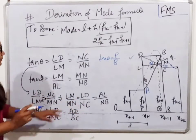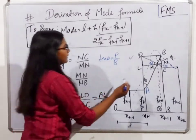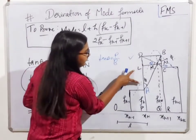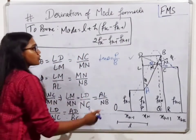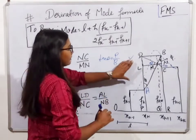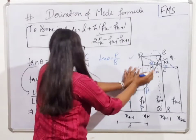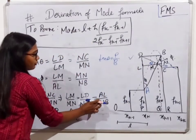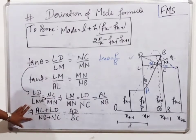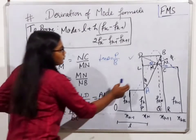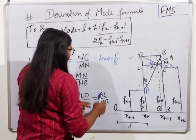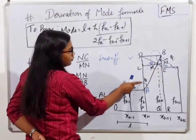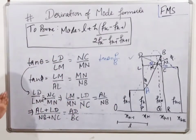So LD by NC equals AL by NB. Applying ratio properties, AL plus LD over NC plus NB equals LD by NC, which equals AL by NB. I can write AL plus LD as AD, and NC plus NB gives us BC. So this simplifies to AD by BC. The starting ratio LM by MN equals LD by NC, which equals AD by BC.